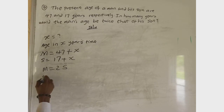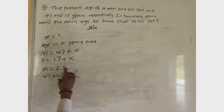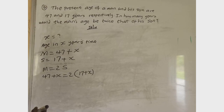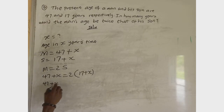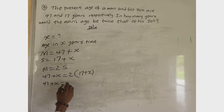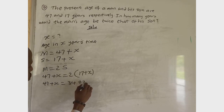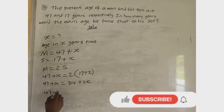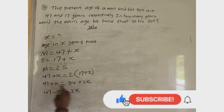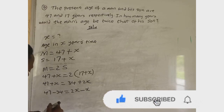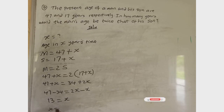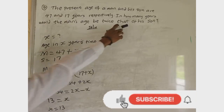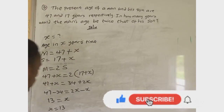In S years' time, the man's new age will be 47 plus S, and the son's new age will be 17 plus S. The man's age equals twice the son's age: 47 plus S equals 2 times (17 plus S). Opening the bracket: 47 plus S equals 34 plus 2S. Collecting like terms: 47 minus 34 equals 2S minus S, giving 13 equals S. So S equals 13 years.